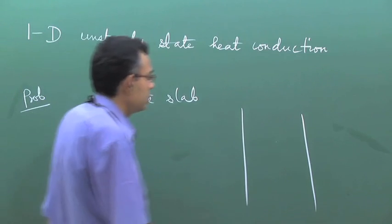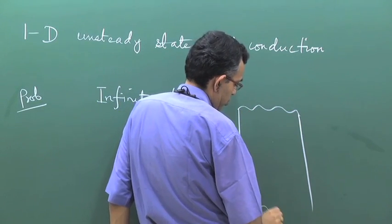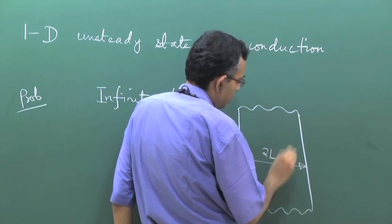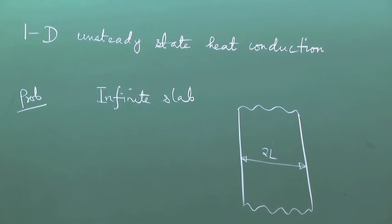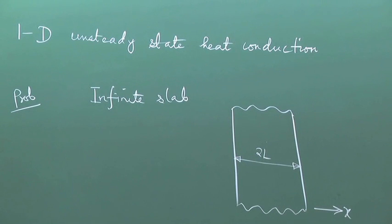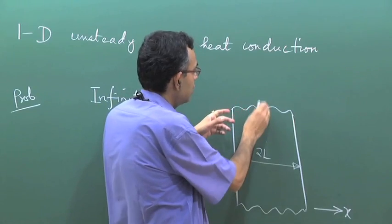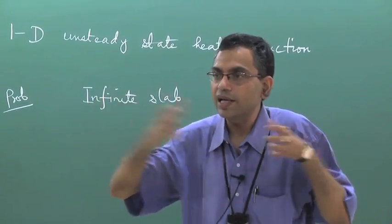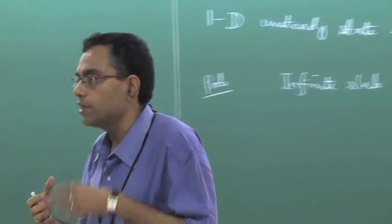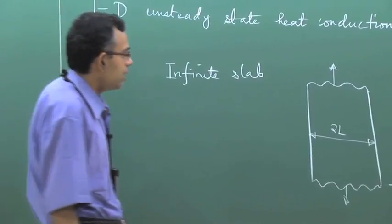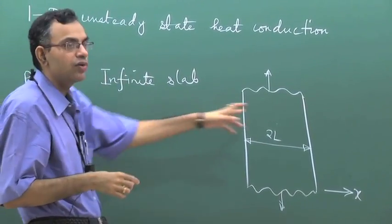Let us say we have a slab which has a thickness of 2L. The direction in which it has a thickness of 2L is the x-direction. The other directions are infinitely large, and because they are infinitely large, the gradients along those directions are very small. Therefore, the corresponding second-order derivative terms are neglected in the heat conduction equation, and we will come up with a simplified equation. Because we are working with a problem, let us give the boundary conditions and then we will solve the problem.